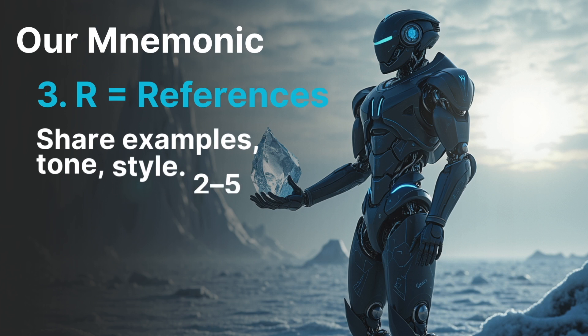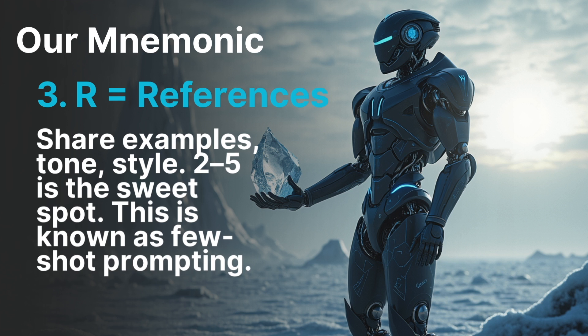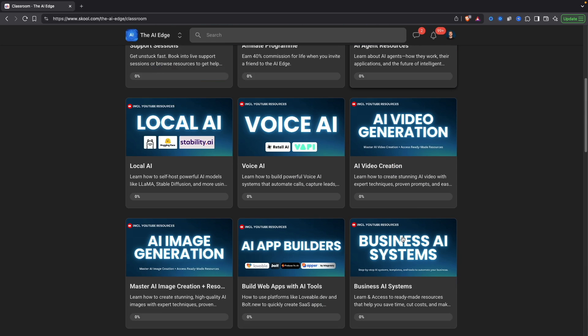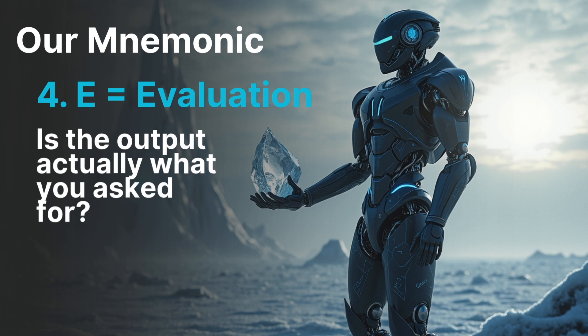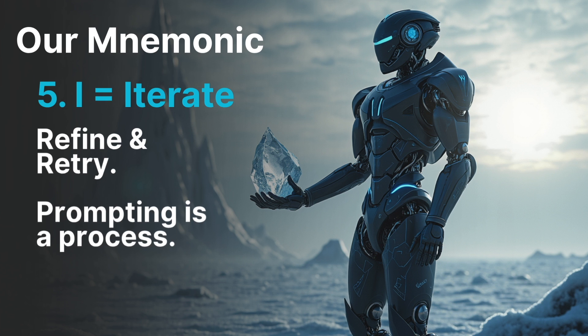R is reference - share examples, tone and style that you want the output to replicate. Two to five examples is a really good sweet spot, and this is known as few-shot prompting. Next up is E, which is evaluate - we actually check if the output from ChatGPT, Gemini, or Claude has done what we want. If it has, great. If not, that's where I comes in, which stands for iterate. If it missed the mark and we need to refine and retry, we can.